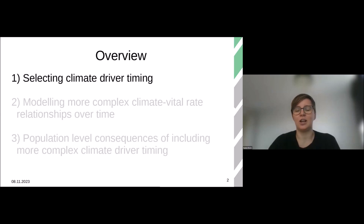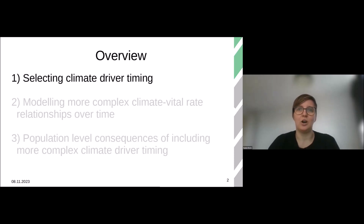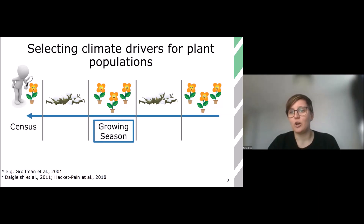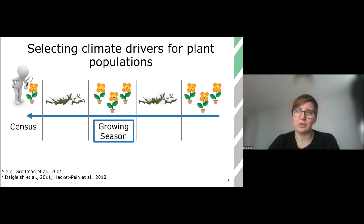When we select climate drivers for our population models, a lot of times we spend a lot of time thinking about what sort of climate variable we're interested in — whether we're interested in temperature or precipitation — but not as much attention is spent on actually when that specific climate variable might be important. So if you look in the plant literature, what you see is that when we select a climate driver for plant populations, the thing we are most interested in is usually the most recent full growing season. A lot of times this is selected because of an a priori expectation, and these assumptions are actually based strongly on processes that we know of, or just general knowledge.